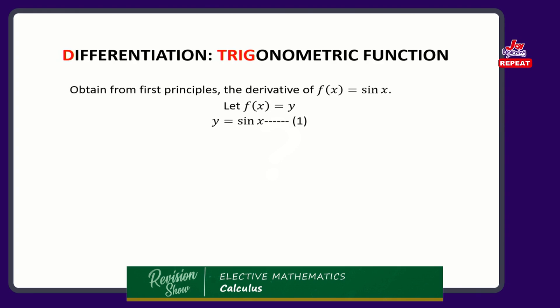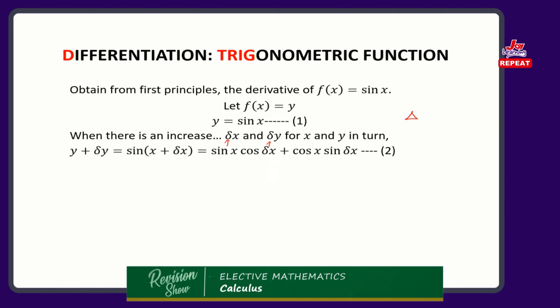Let's add a little to both sides — a little of y and a little of x. So let delta x and delta y be the small increases in x and y respectively. If we increase them, we'll have y plus delta y equals the sin of x plus delta x. I have written this as sin x cos delta x plus cos x sin delta x. This is a trigonometric identity — not a simple expansion.